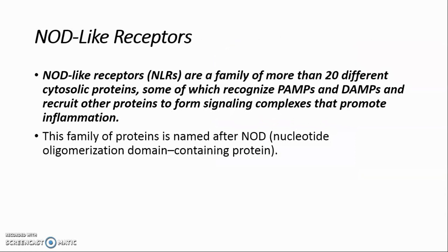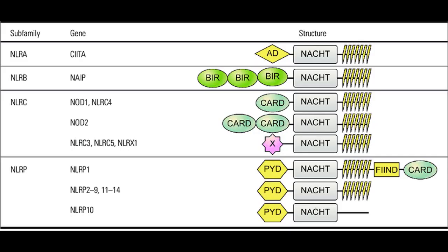NOD-like receptors (NLRs) are a family of more than 20 different cytosolic proteins, some of which recognize PAMPs and DAMPs, and recruit other proteins to form signaling complexes that promote inflammation. This family of proteins is named after NOD, Nucleotide Oligomerization Domain Containing Protein.